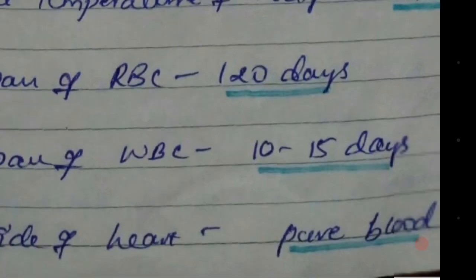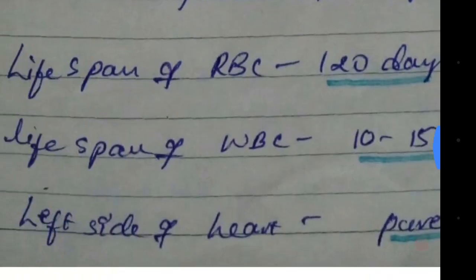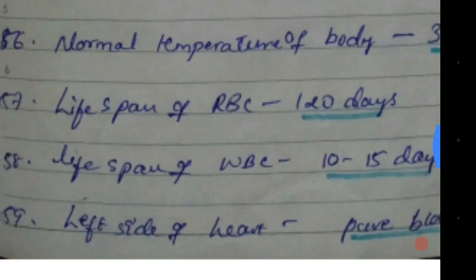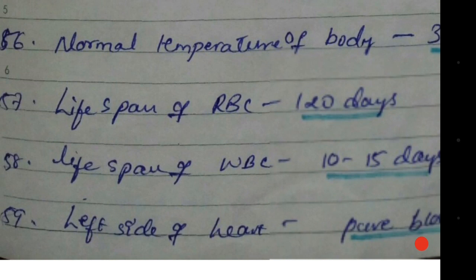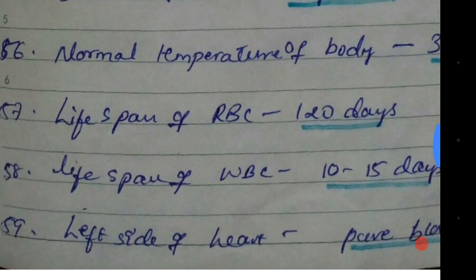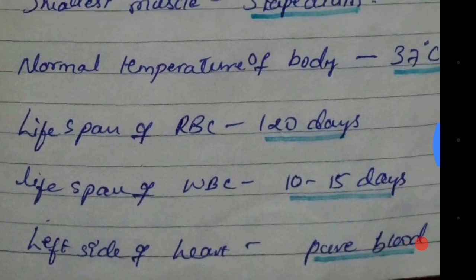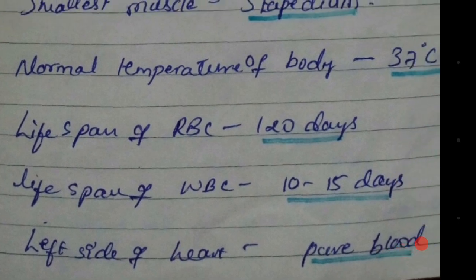Life span of WBC: WBC is the white blood corpuscle. It has a life span of 10 to 15 days.